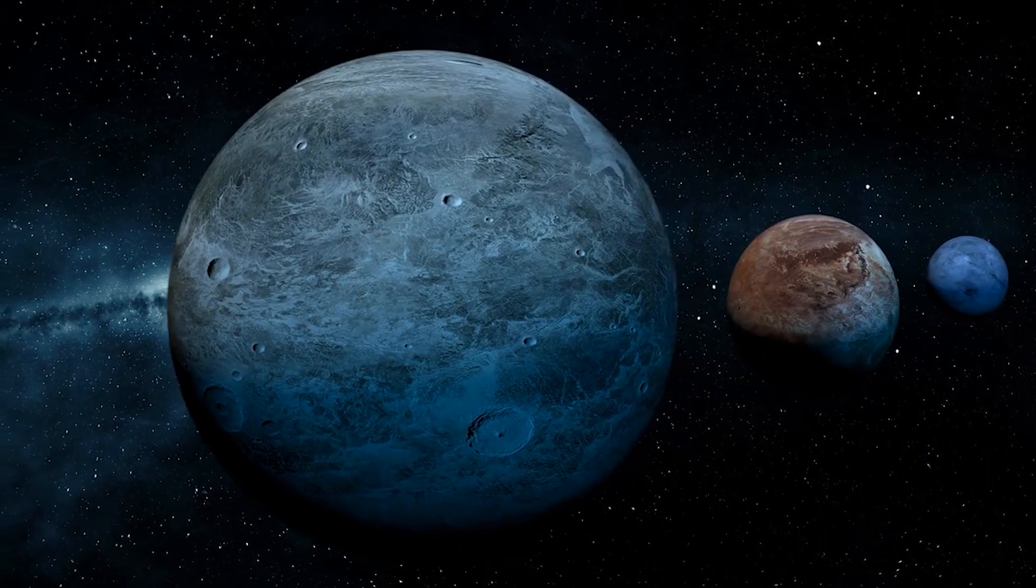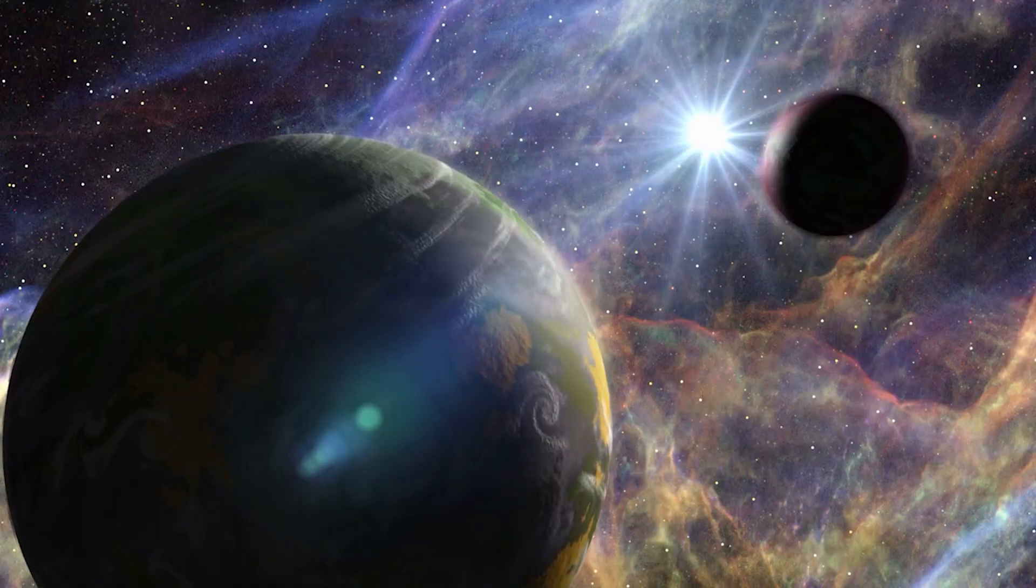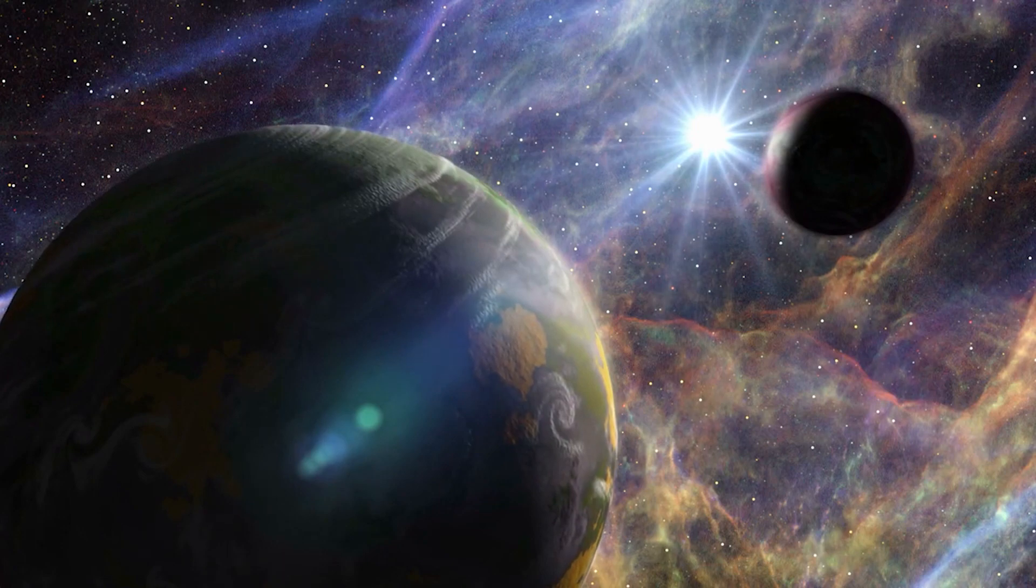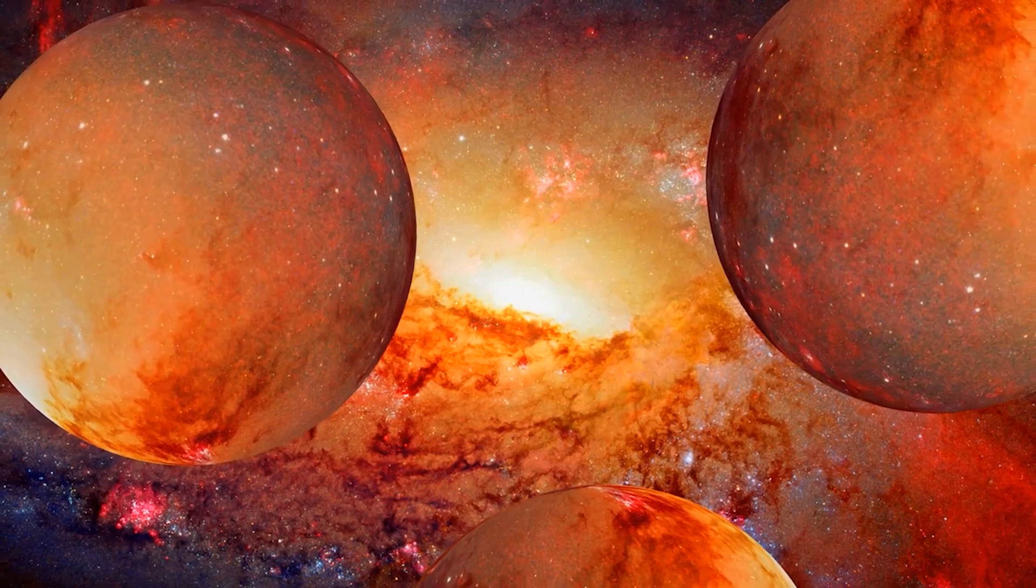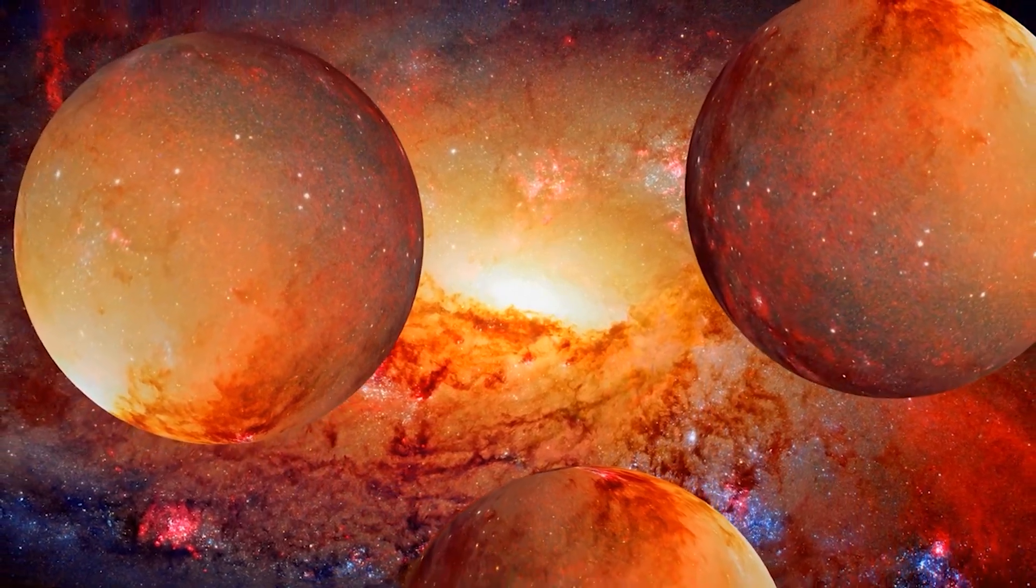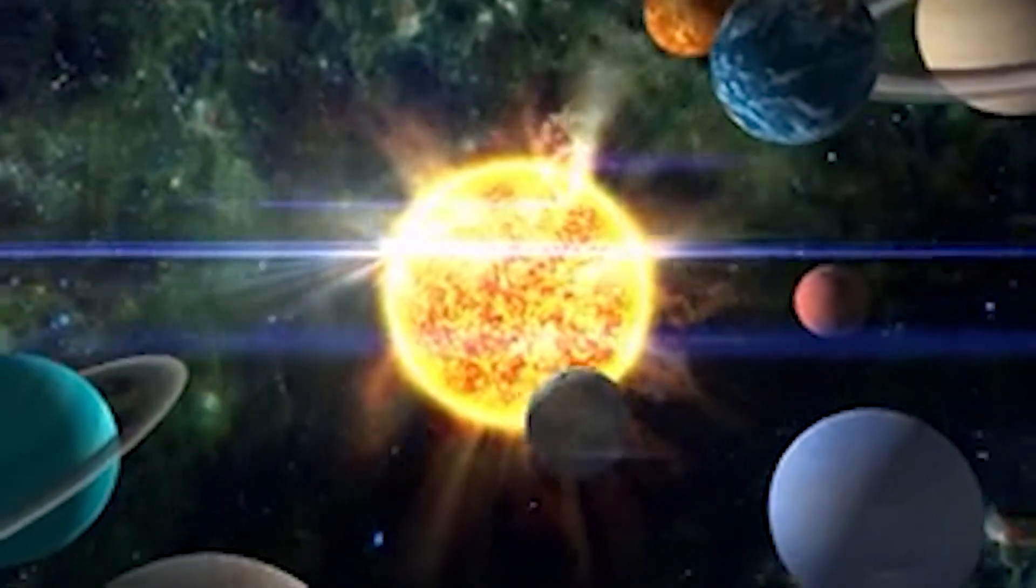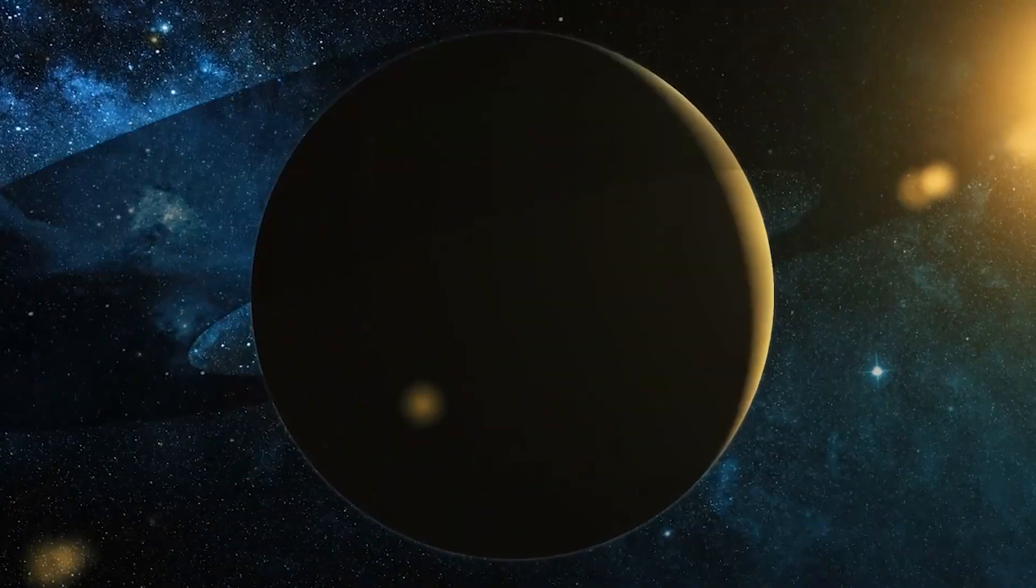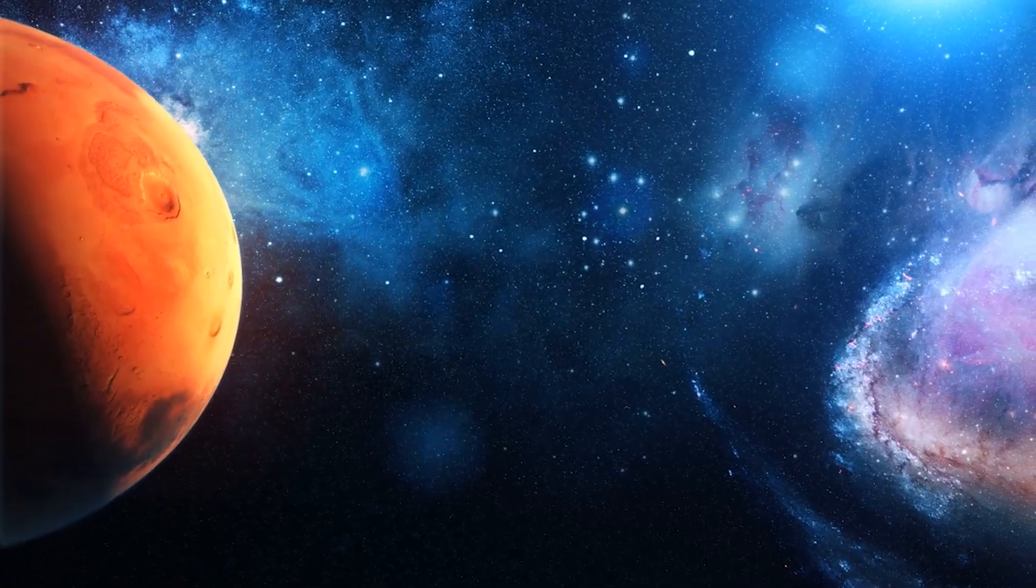The classical Kuiper Belt appears to be a hybrid of two distinct populations. The first group, known as the dynamically cold, has almost circular orbits with an orbital eccentricity of less than 0.1. The second group, the dynamically hot, has orbits up to 30 degrees more inclined to the ecliptic. The hot population is thought to have evolved around Neptune's initial orbit and dispersed throughout the large planet's migration. On the other hand, the cold population is believed to have originated in its current location since the loose binaries would be unlikely to survive contact with Neptune.